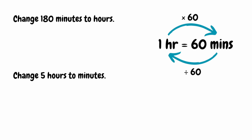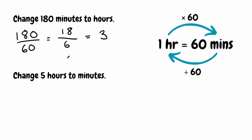For this first example, we want to change 180 minutes into hours. Using our unit conversion, we know to get from minutes to hours we divide by 60. So we do 180 divided by 60. We can simplify that fraction by dividing top and bottom by 10, giving us 18 divided by 6, which equals 3. So 180 minutes is the same as 3 hours.